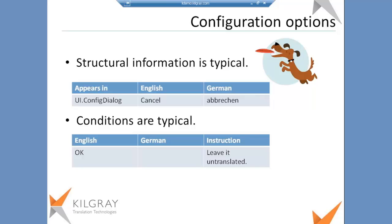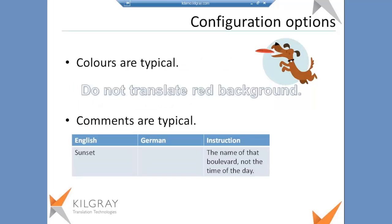For example, you can see an example here. There's the English, there's the German, and there is also a column that describes where this string appears. Multilingual Excel is very often used to translate software strings; another typical use is the translation of catalogs. Conditions are also typical — you can have conditions for non-inclusion. For example, do not import if instruction equals 'leave it untranslated', so that entry will not be imported for translation.